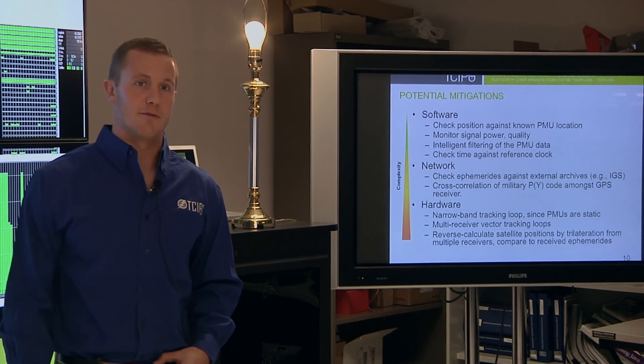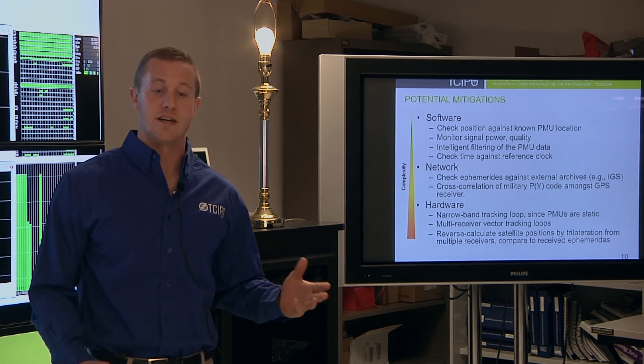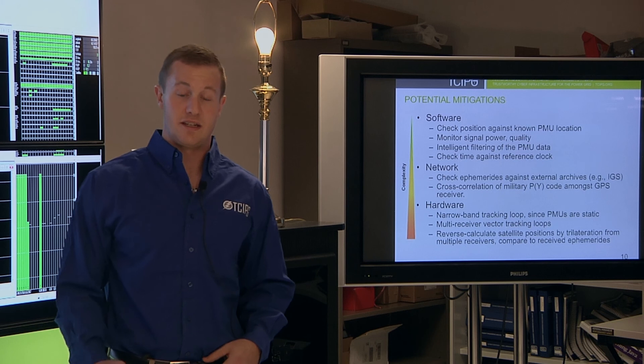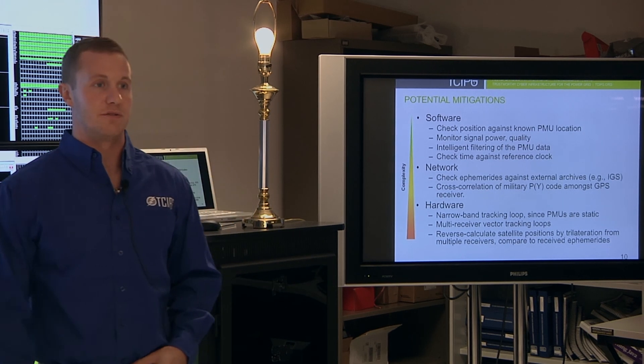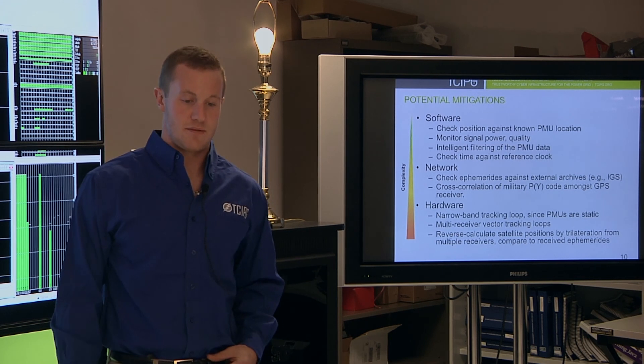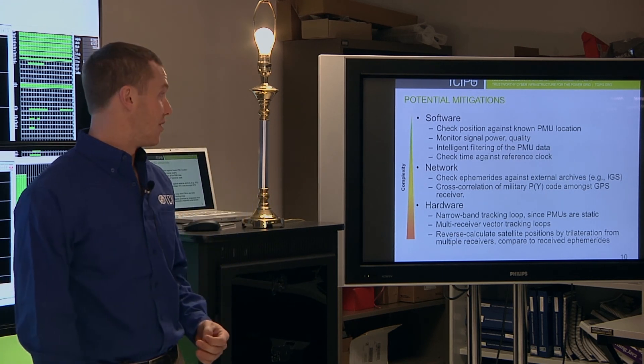The second type of techniques makes use of the fact that the PMUs are connected on a communication network. You can make use of this communication network by doing things like checking the data received at different receivers to make sure that the data received is consistent for all the different receivers. You can also check the data you receive against external archives of those satellites' ephemerides.